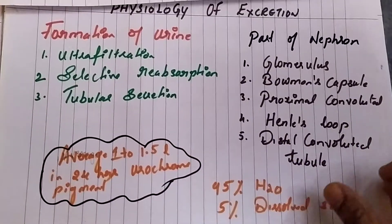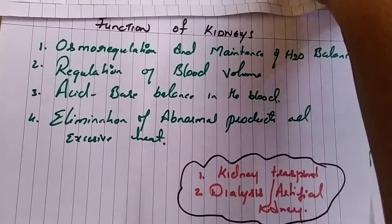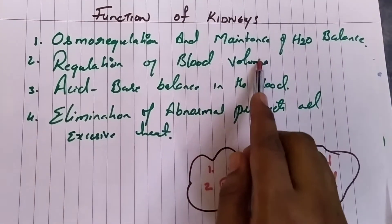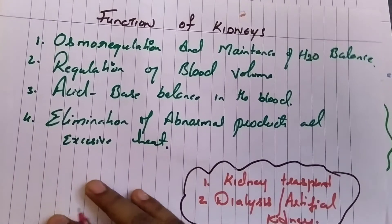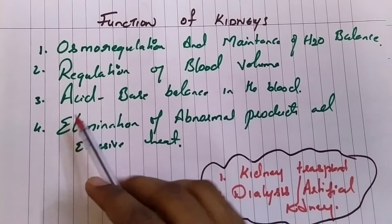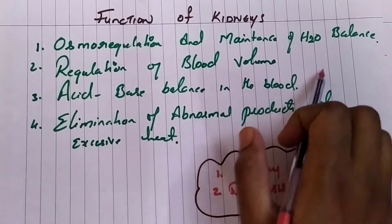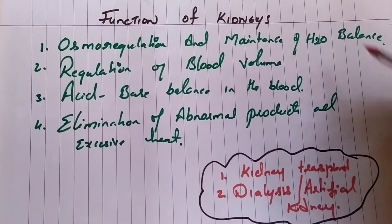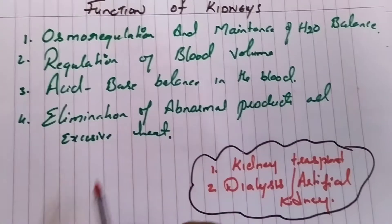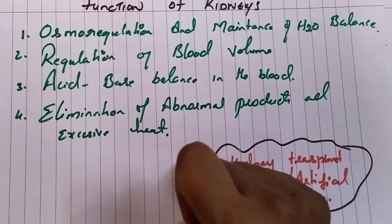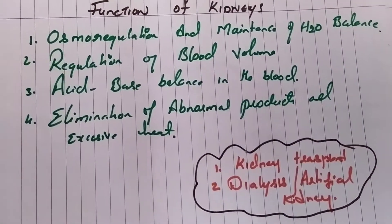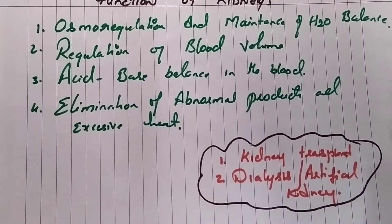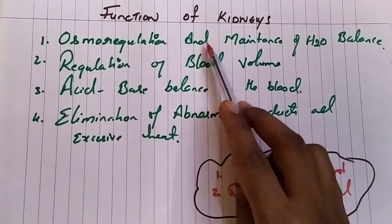Now let us look at the functions of the kidney. The kidney performs osmoregulation and maintenance of water balance — whenever our body requires water, the kidney provides it. Next is the regulation of blood volume. Acid-base balance in the blood is also maintained by the kidneys. Finally, elimination of abnormal and excess products such as water, some salts, and nitrogenous waste like urea and creatinine — all products which are not necessary or are in excess are removed with the help of the kidneys.